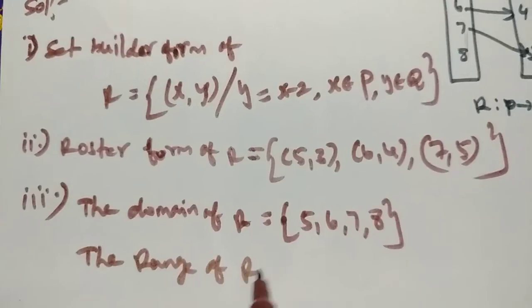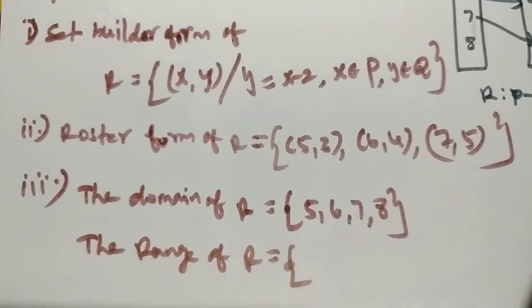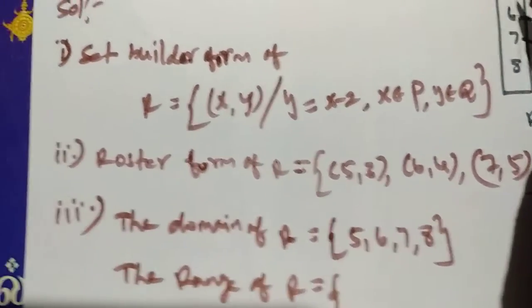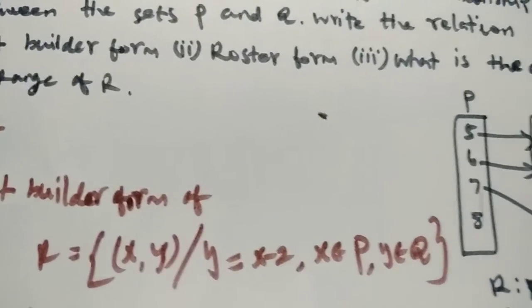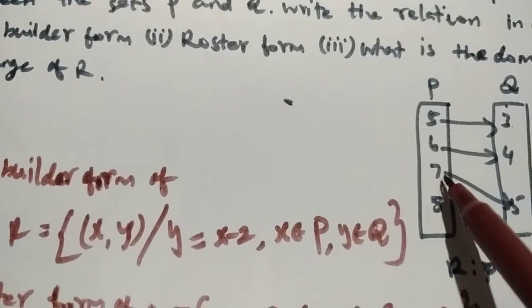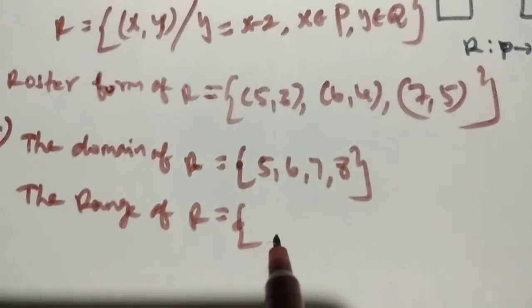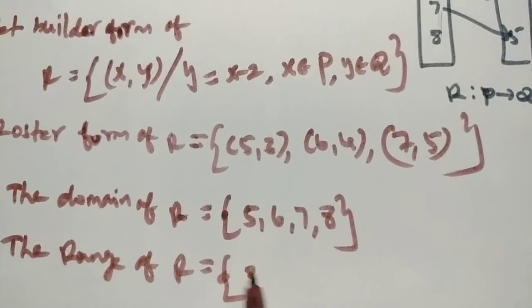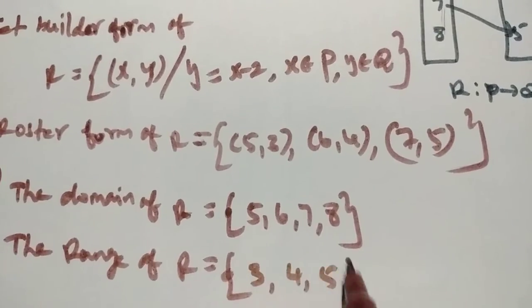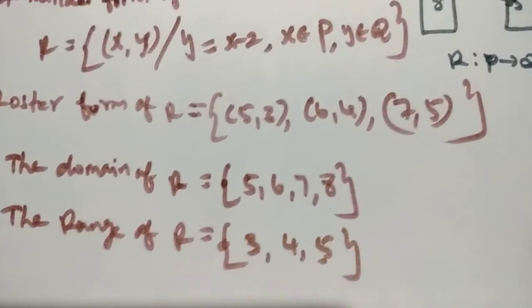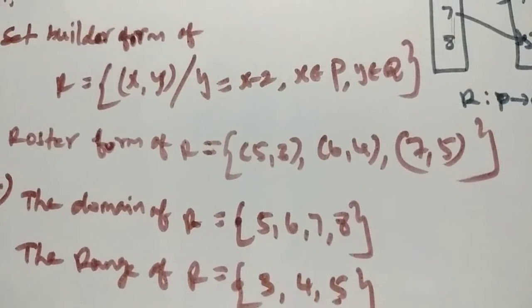Domain and range of R: the domain from the mapping is 5, 6, 7, 8. The range is 3, 4, 5. Range of R equals 3, 4, 5. Thanks for watching.